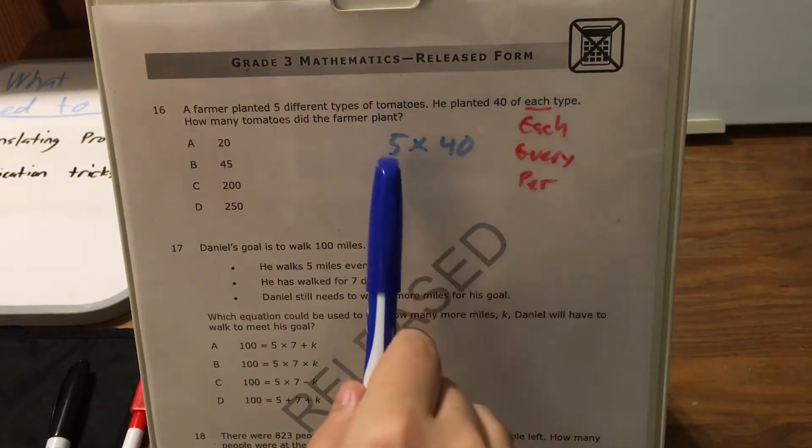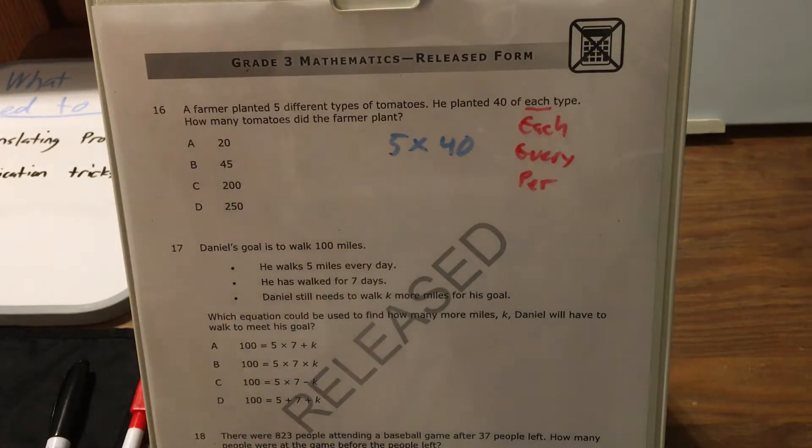So if I took 40 and 5 and I just added them, that would get me 45, which would get me choice B, and I'd think, oh cool, I'm done with the problem. But we're not. It's a bit more complicated than that, but not by much.